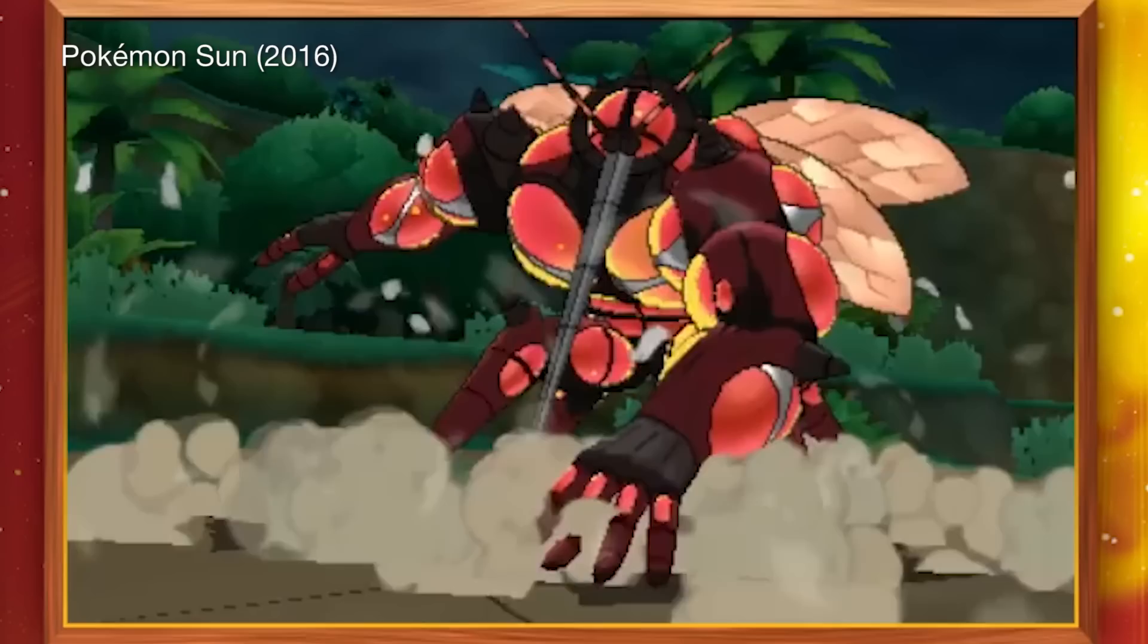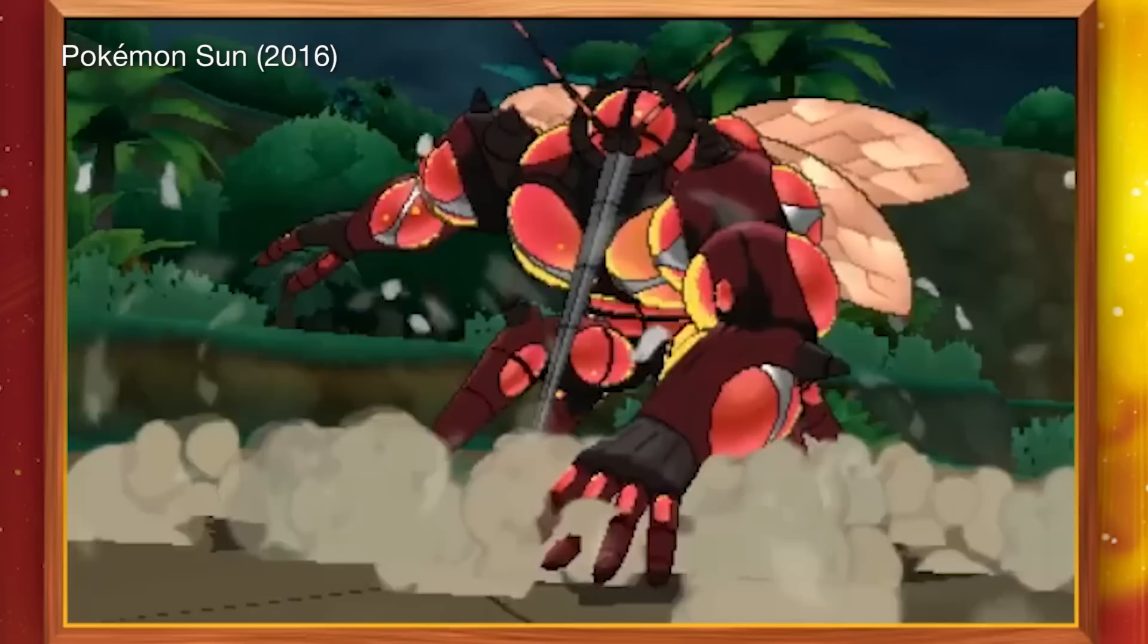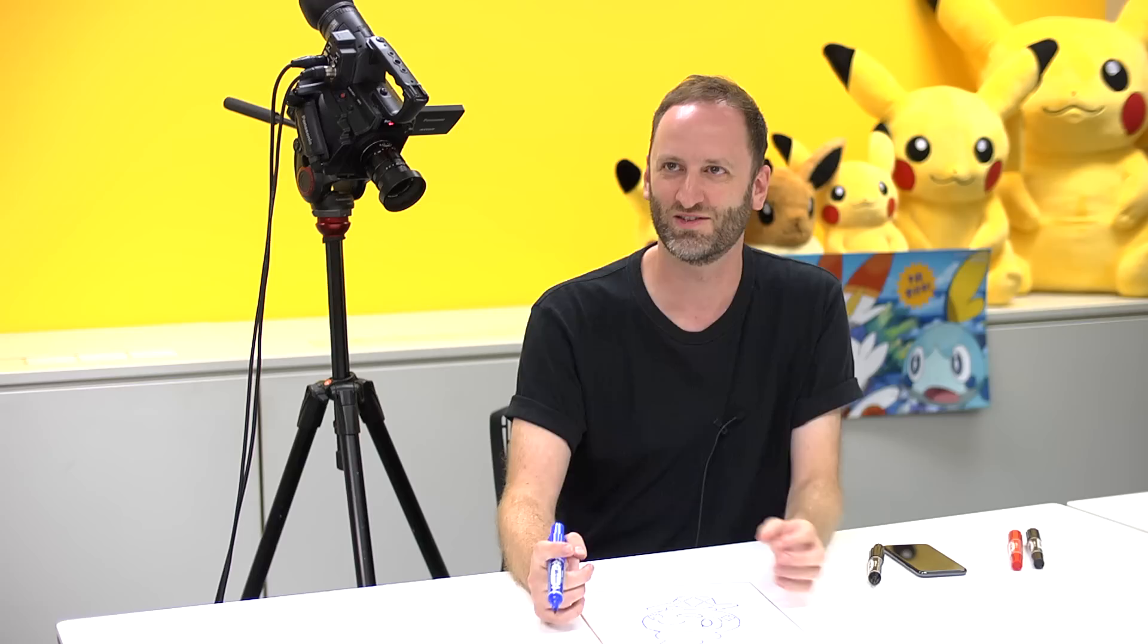So for example, with Buzzwole, he's an alien, strong, macho looking Pokemon, but he has these kind of goofy, macho poses that he does. That kind of silliness takes the edge off his intimidating visual. So you feel like, yeah, you could have a friendship with this. You know he's a bit of a poser. Exactly. Yeah, you got it.